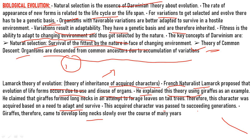The use and disuse of organs: constant use of an organ makes it more efficient and specialized, while disuse of an organ brings about its degeneration and eventual loss over time. Third, inheritance of acquired characters: traits acquired due to the internal vital force, change in environment, new needs, and use or disuse of organs are passed on to the next generation. Only after several generations does it give rise to a new species with new features, new variations, new genes, and new traits.